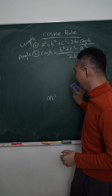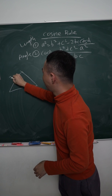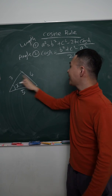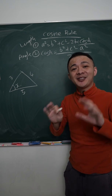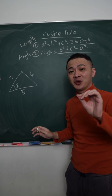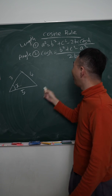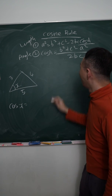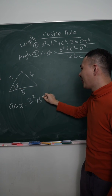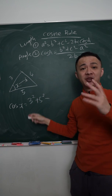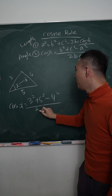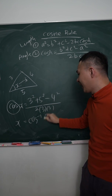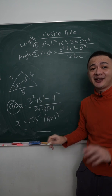Different example: sides 3, 4, and 5, find angle X. I have three sides without any angle — use the second cosine formula. Cos X = (3² + 5² − 4²) / (2 × 3 × 5), because A is the length opposite the angle, which is 4. Then apply cos inverse to get the final angle.